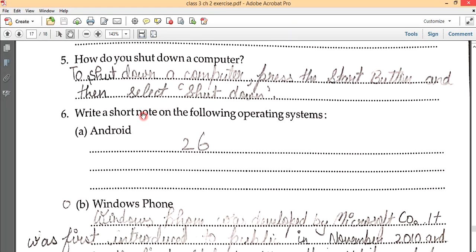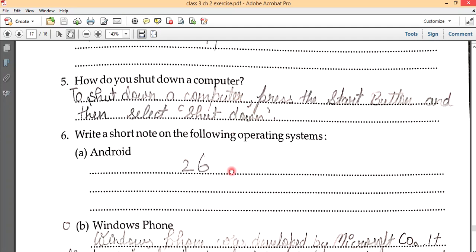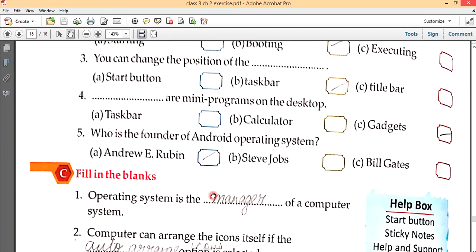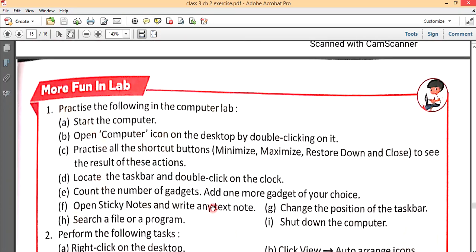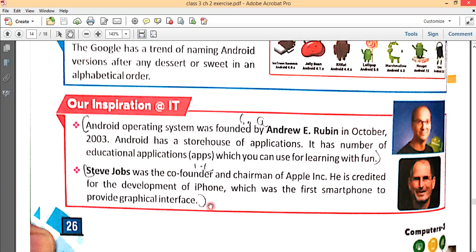Android - page number 26. Android operating system was founded by Andrew E. Rubin in October 2003. Android has a storehouse of applications. It has a number of educational applications. You can work on applications linked to Google.